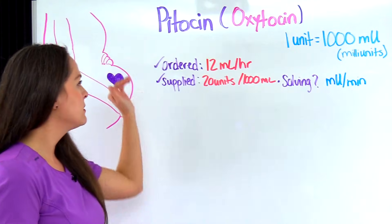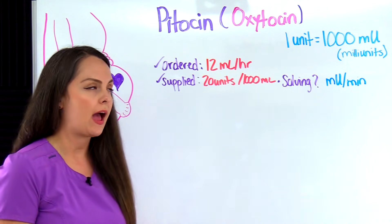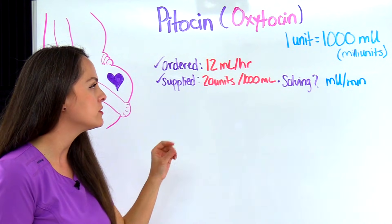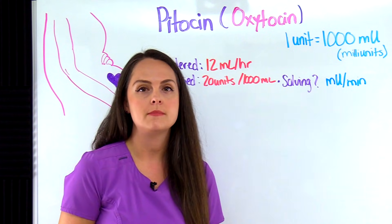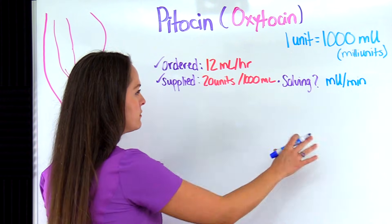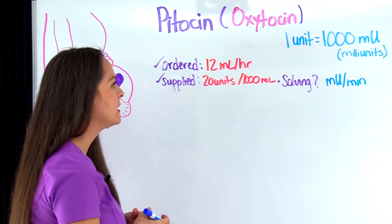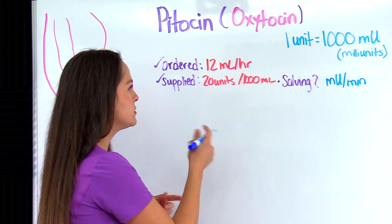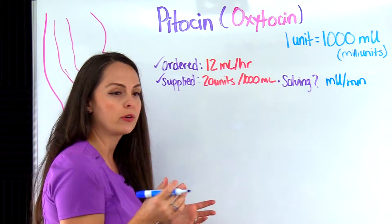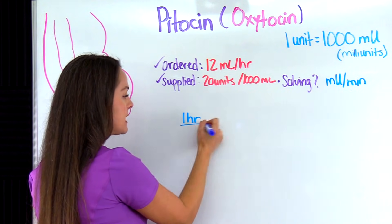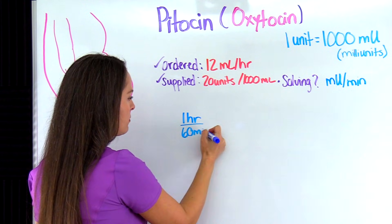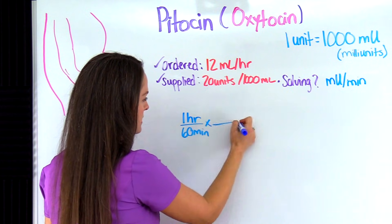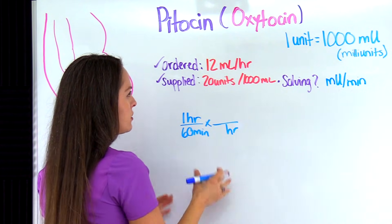The second problem: a patient is receiving Pitocin at a rate of 12 milliliters per hour, supplied with a bag that reads 20 units per 1,000 mL in lactated Ringer solution, and we're solving for milliunits per minute. I'll do the opposite of the last problem and start with hours. We know one hour equals 60 minutes — that gives me minutes right away, which is what I'll need at the end.